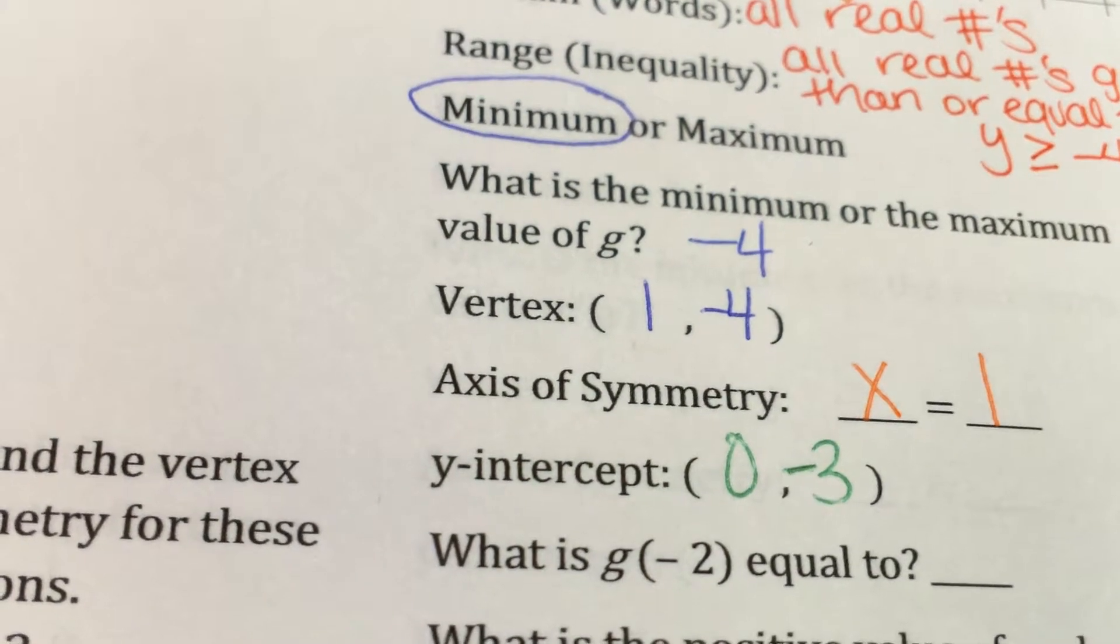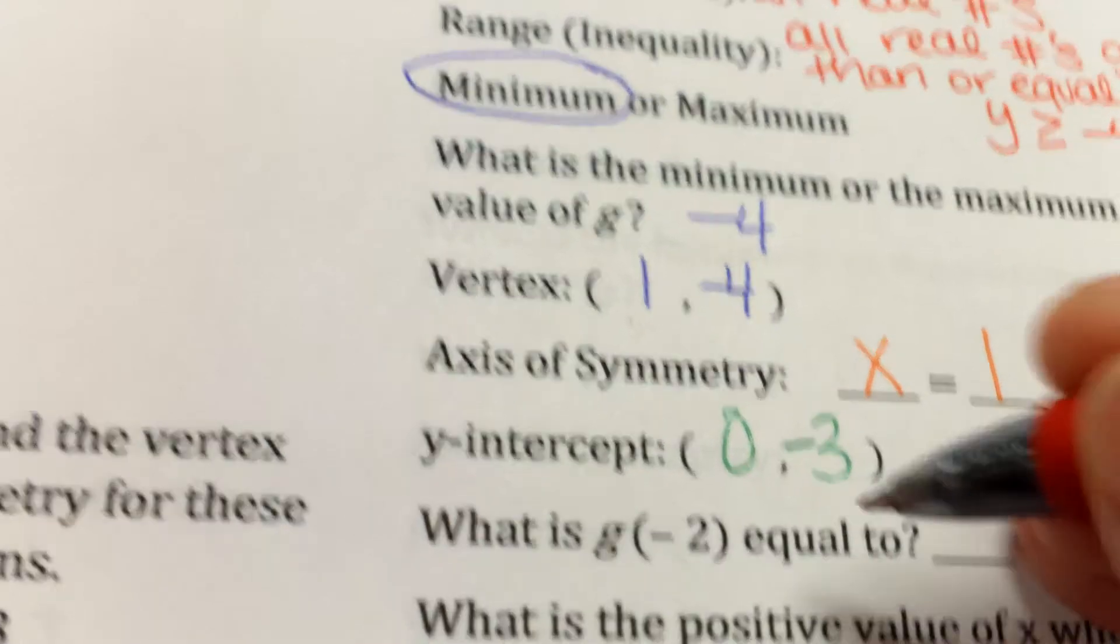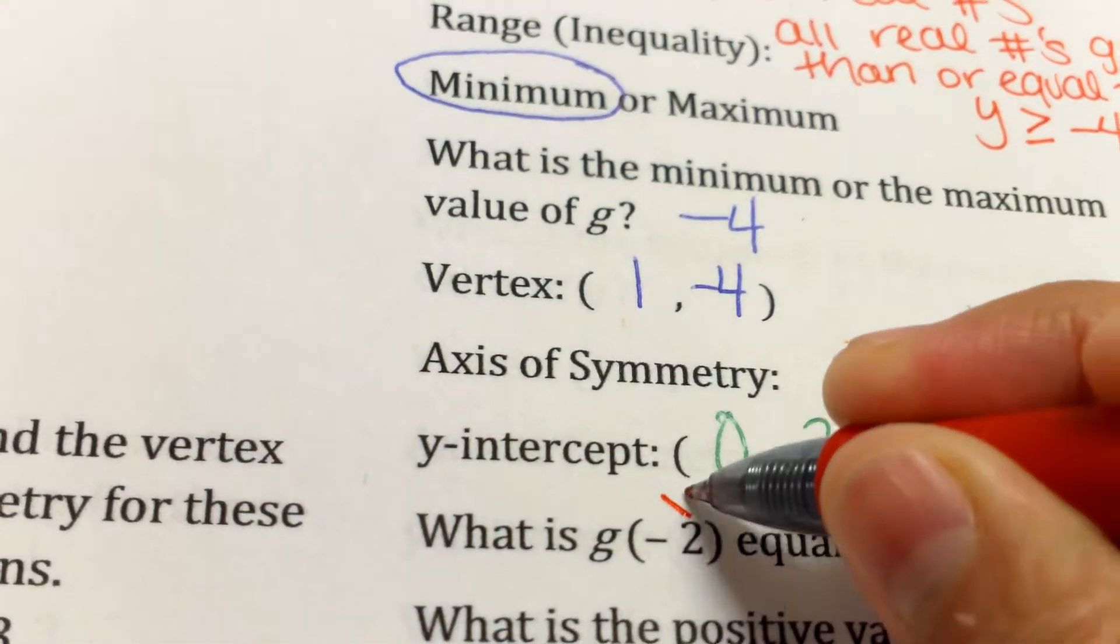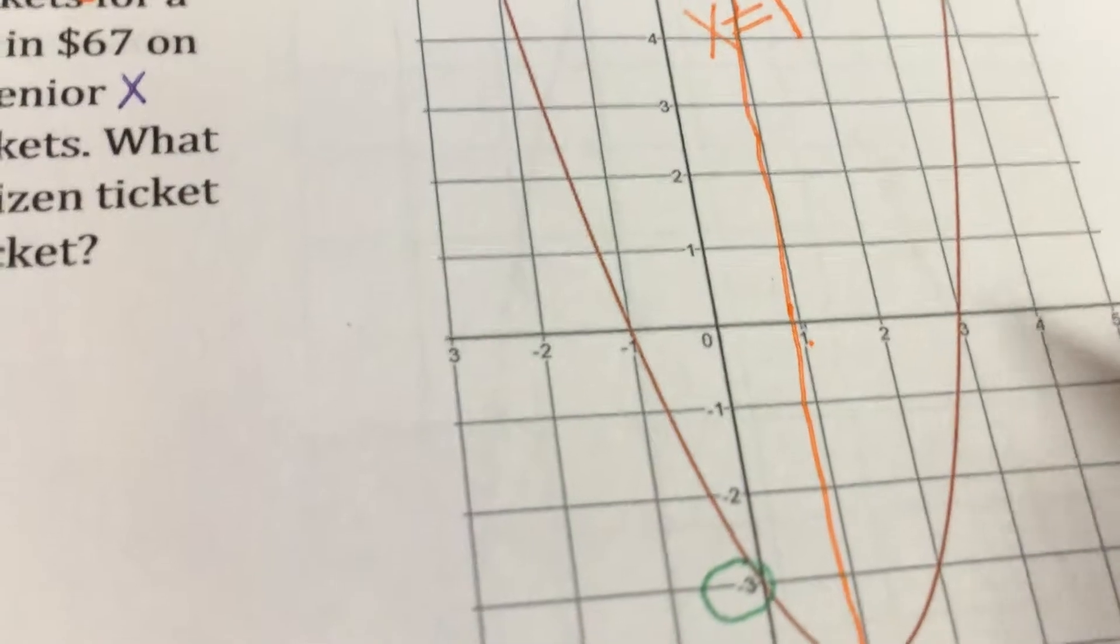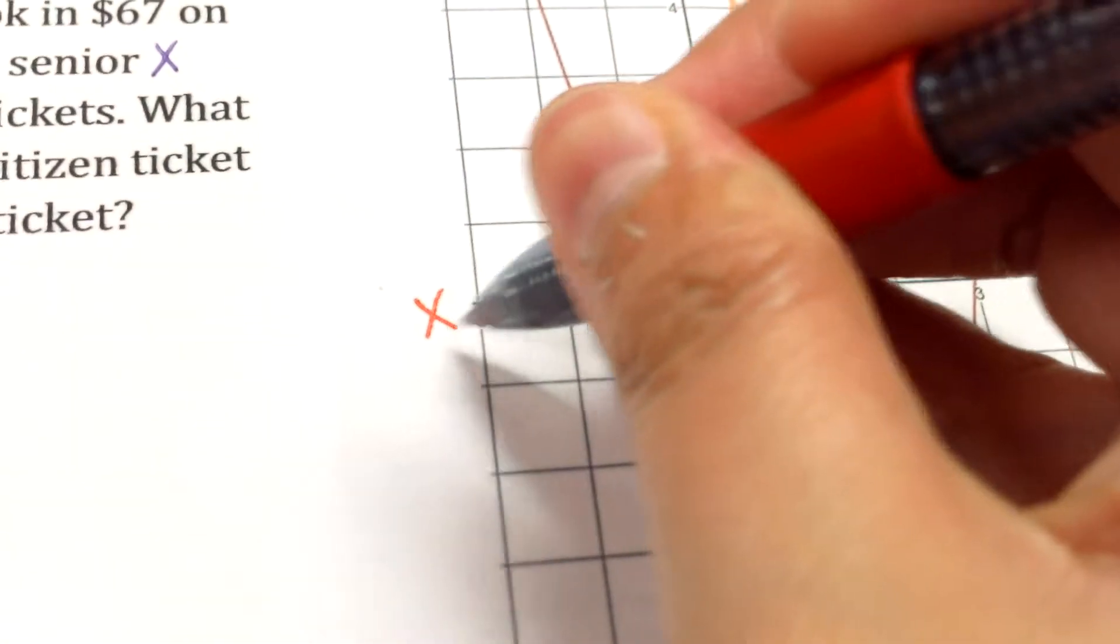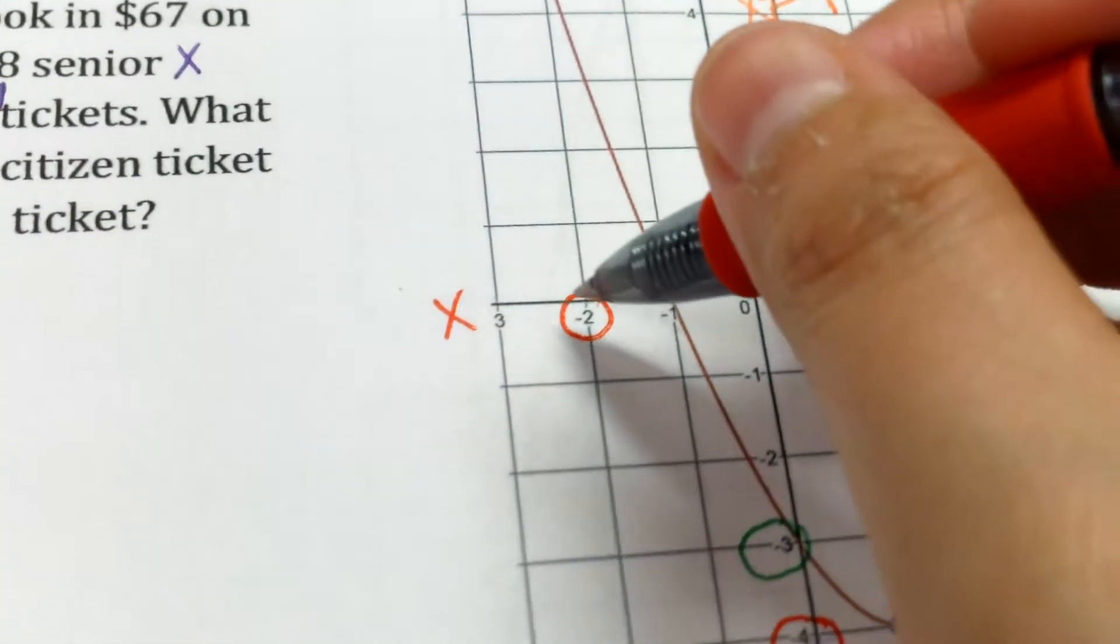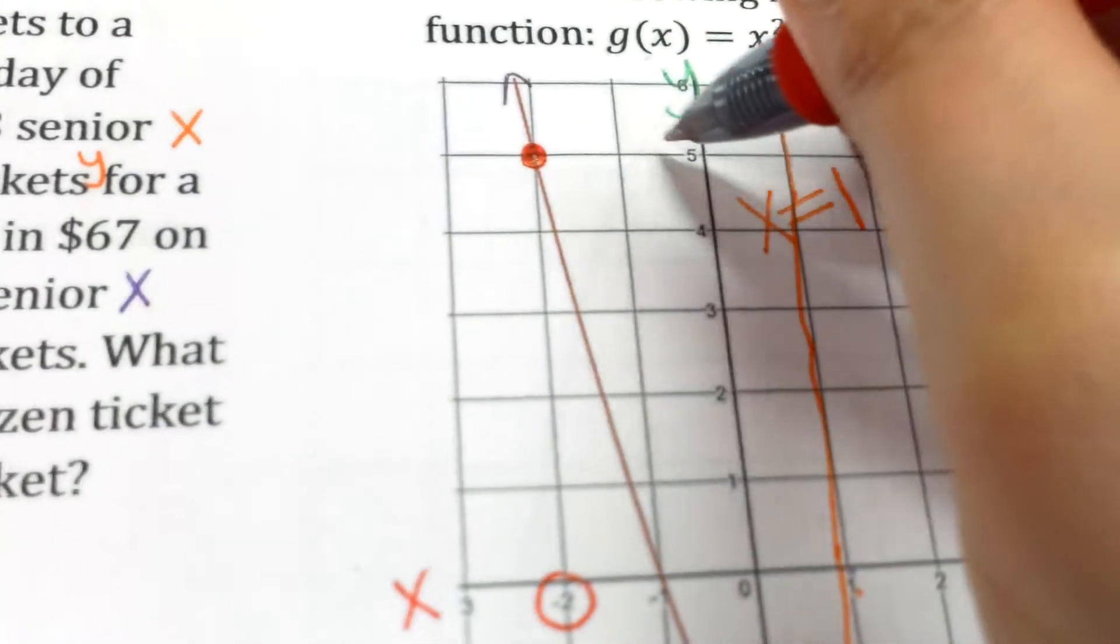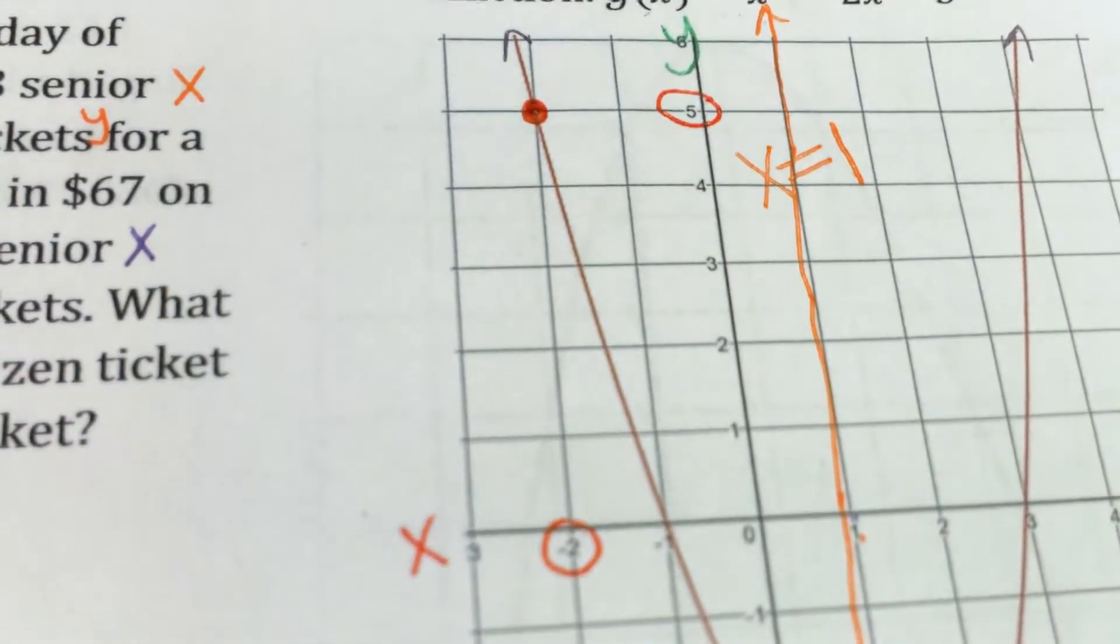Now we're looking at what is g of negative 2 equal to. This is the same as g of x, so it's taking place of the x. So we go to the x being negative 2. So we go to the graph, we go to the x-axis at negative 2, which is right here. Where is my graph? It's way up here and it crosses right there, which is number 5. That's my value.